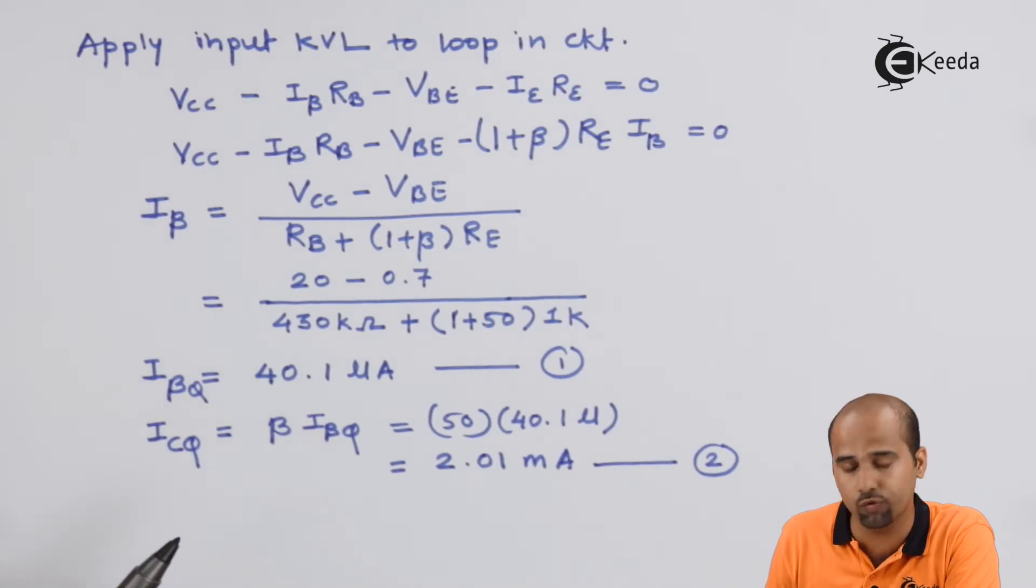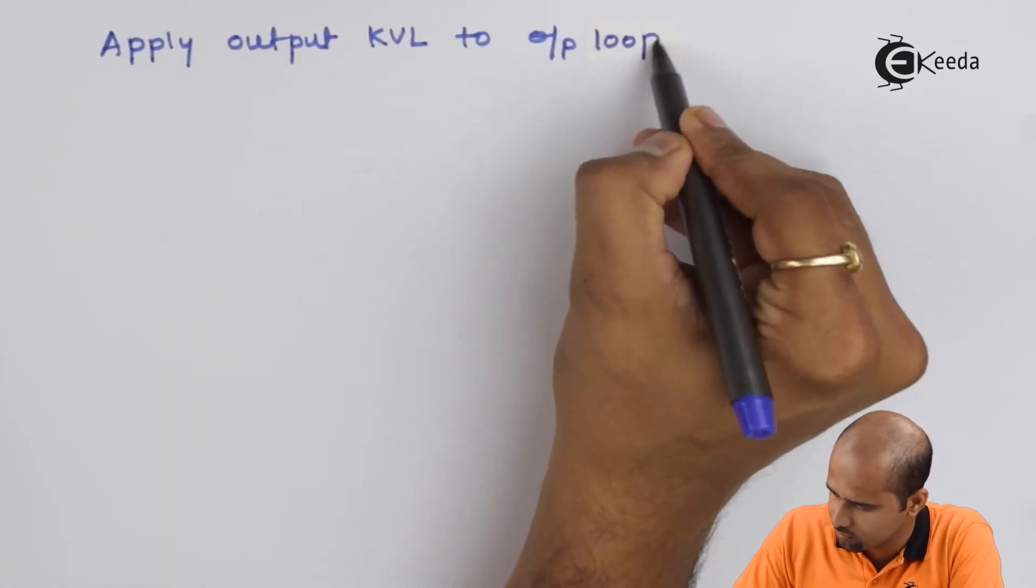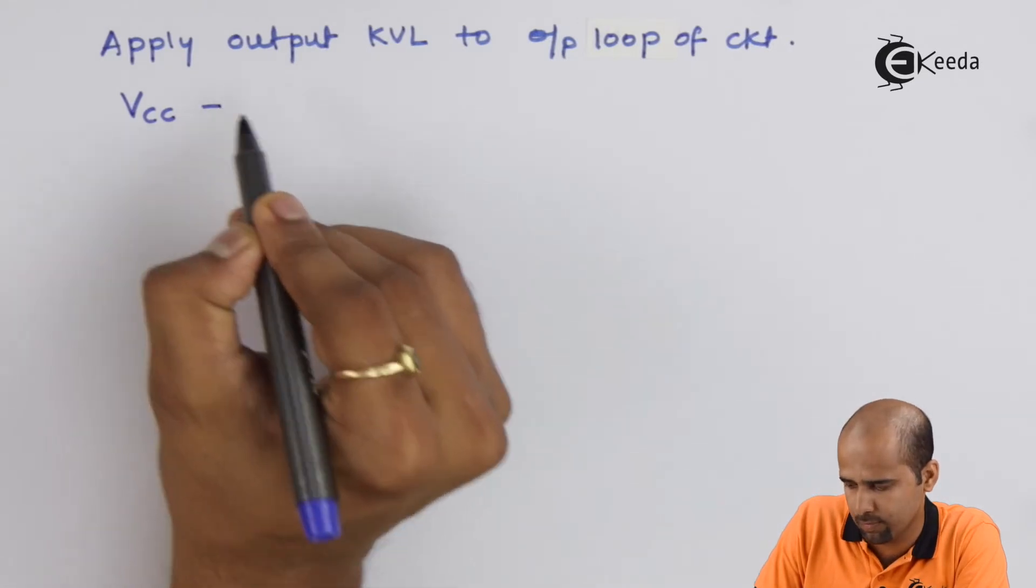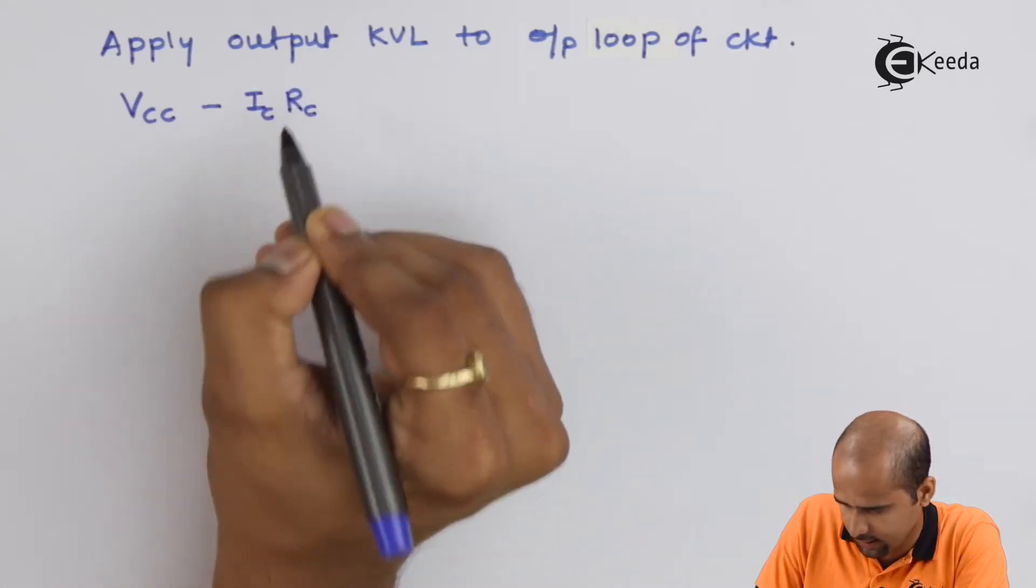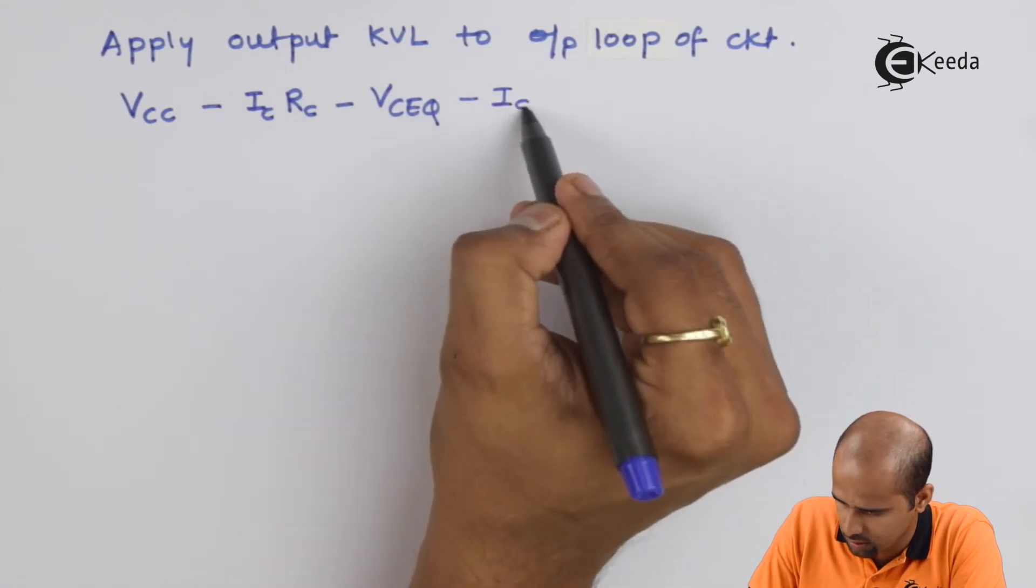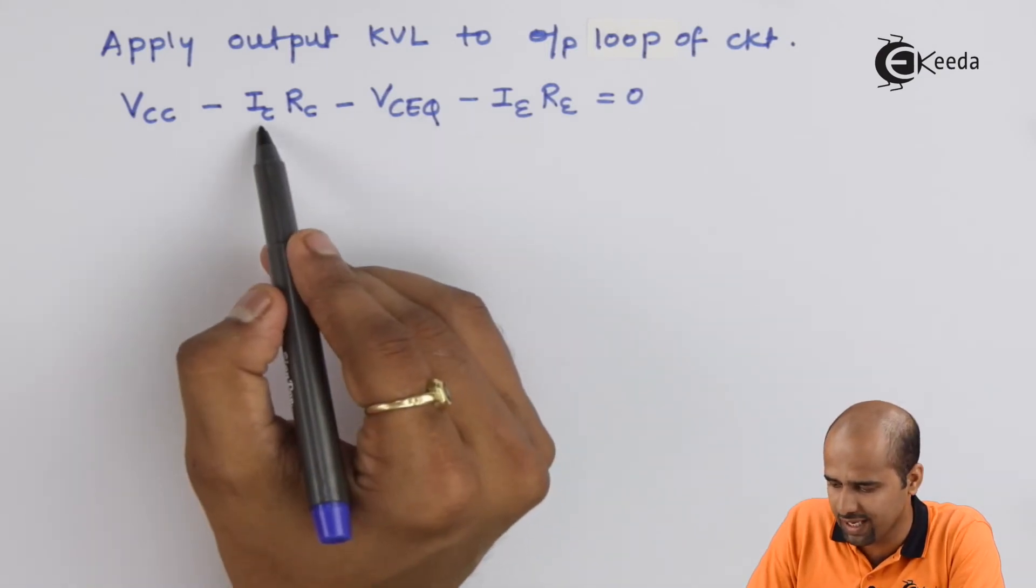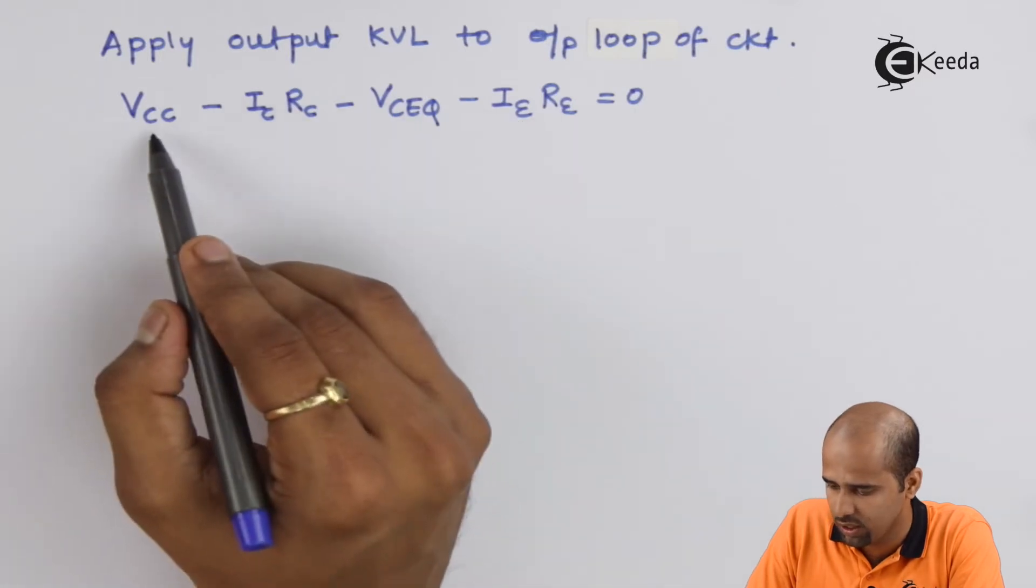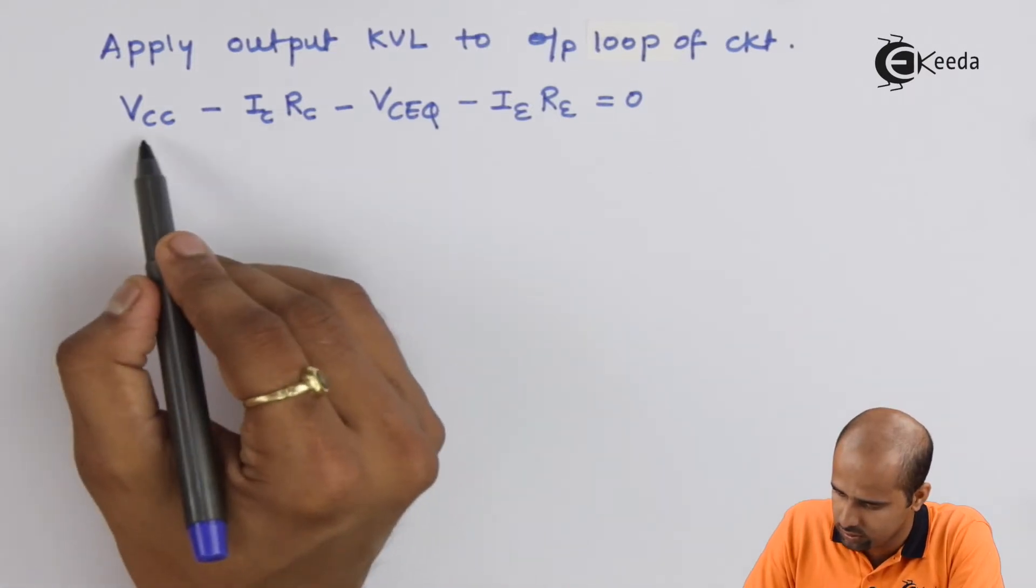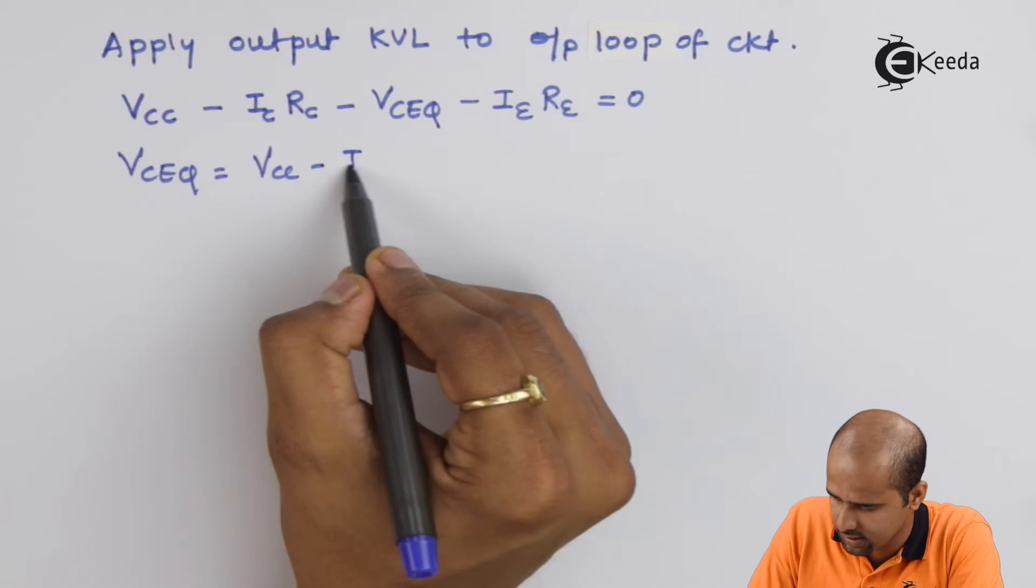After getting the value of ICQ we will move towards the output KVL. We will be getting VCC minus IC·RC minus VCEQ minus IE·RE is equal to 0. We want VCEQ. We are assuming that IC and IE·RE is nearly same. We also can find out particular value of IE by multiplying beta plus 1 to IB value.